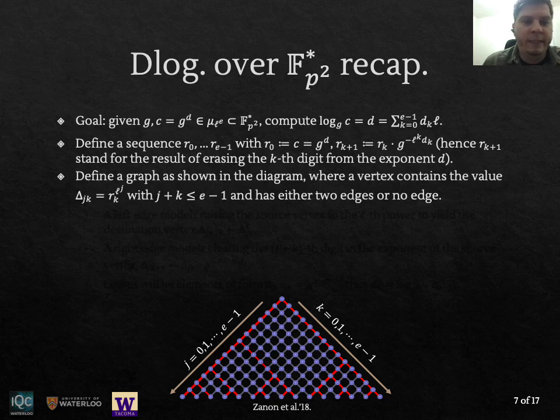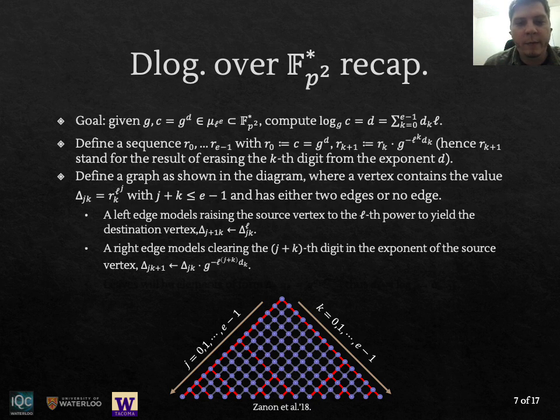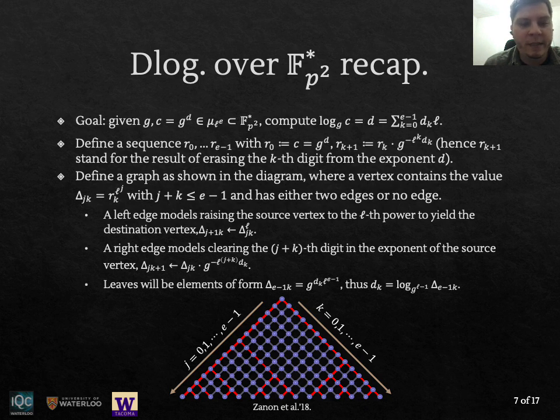Zanon et al. in 2018 showed how to reformulate this problem in terms of a graph very similar to the strategy used to compute smooth order isogenies. So basically the root of the graph is going to be the challenge and going to the left on the graph means raising to the power of ℓ and going to the right is going to model removing a digit or multiplying by G^{-ℓ^{j+k} d_k}. So basically using an optimal strategy to traverse this graph and compute all the digits, and this was sort of expected. It was mentioned by Victor Shoup long time ago that there would exist an optimal strategy for this problem but no one had given a solution before.